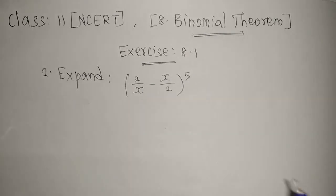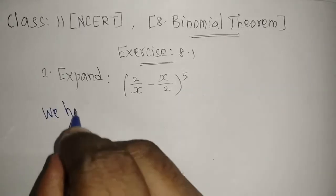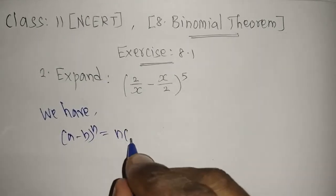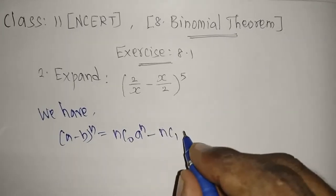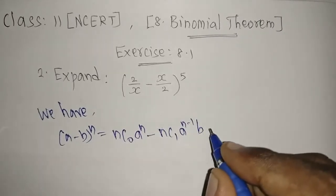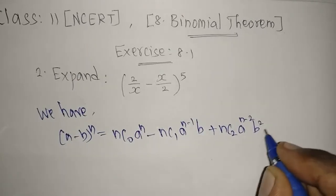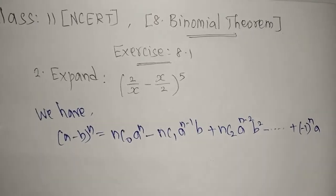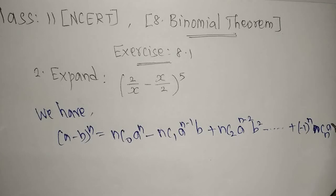This is in the form of (a minus b) whole power n. First we will write the formula: (a - b)^n = nC0 * a^n - nC1 * a^(n-1) * b + nC2 * a^(n-2) * b^2 - ... + (-1)^n * nCn * b^n. That is our required formula.